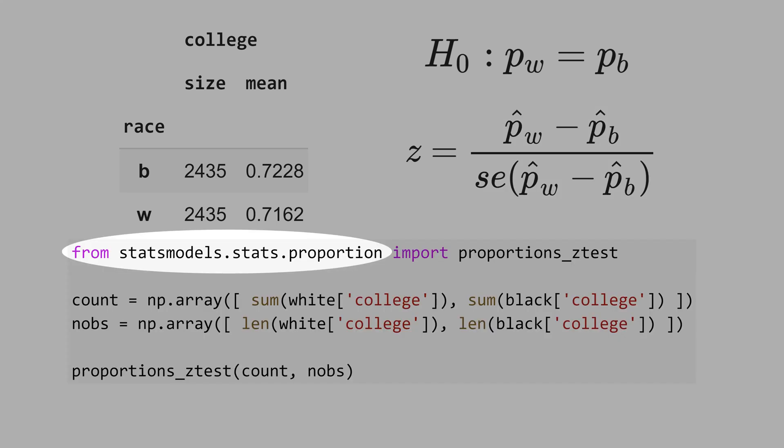From the stats model, let's import the proportions_ztest. This code here gives you the number of white people with college degree, and this code here is the number of black people with a college degree. You have to put these two numbers in a NumPy array.